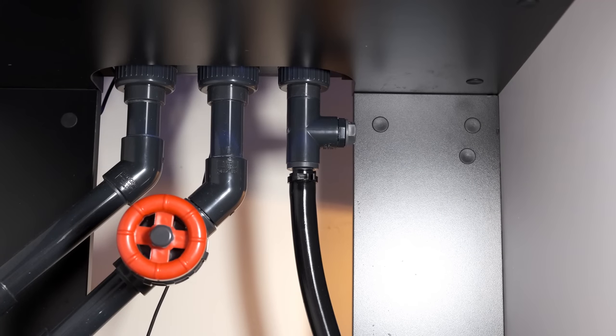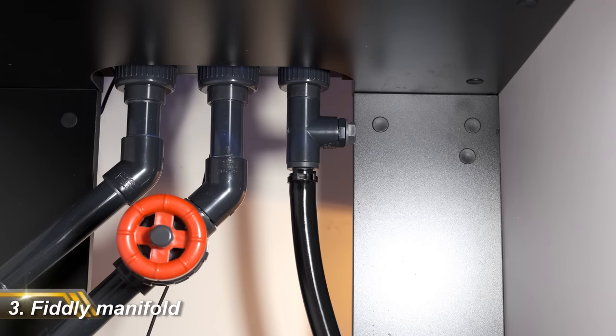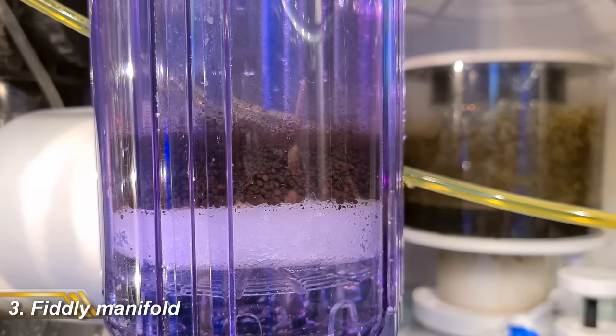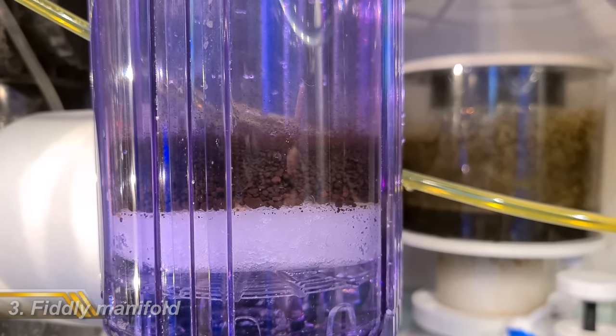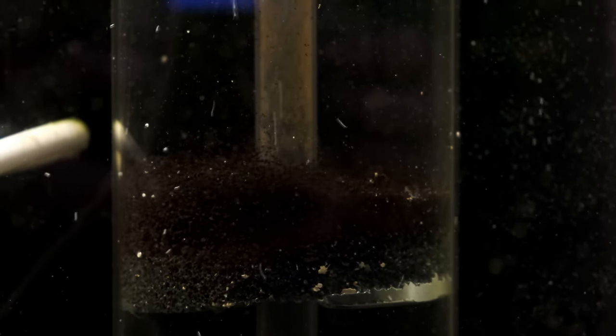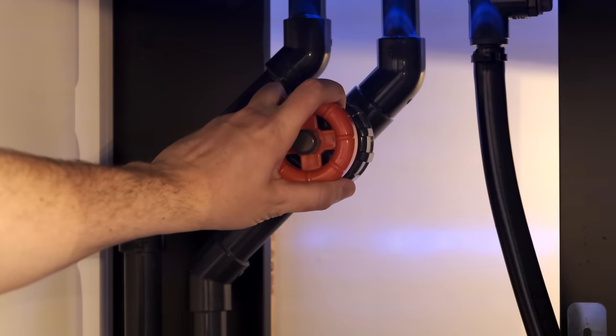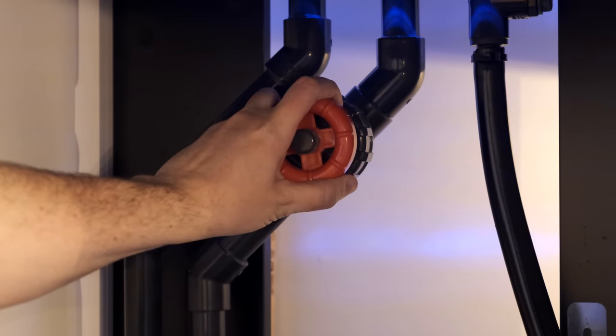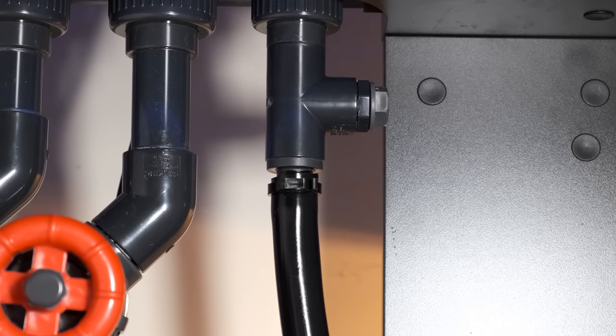And while the manifold is a good option, having it running off the return pump isn't ideal. If you adjust the amount of flow for, say, a phosphate reactor, that will have a knock-on effect on your return line, so you'll need to adjust the gate valve again. And things like Rowaphos and activated carbon clog over time, which will again direct more flow through the return line, which will again have you reaching for the gate valve. So it would be better, in my opinion, to have a manifold that runs off a designated pump, and I personally won't be making use of the built-in manifold.